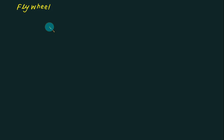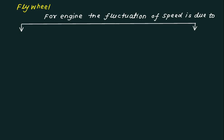A flywheel is normally used to store the excess energy during intra-cycle fluctuation. In the case of an engine, the fluctuation of speed is due to intra-cycle or inter-cycle variation.